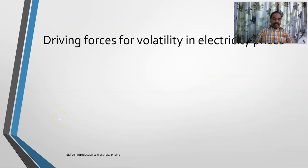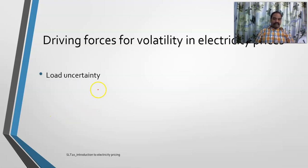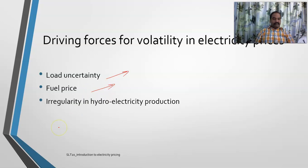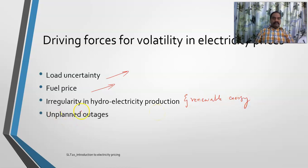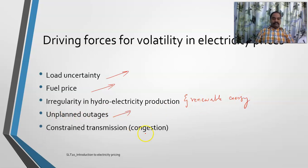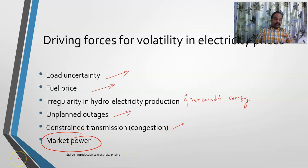The driving forces for electricity price volatility include: first, load uncertainty — if load suddenly increases, prices spike. Second, fuel prices, which we are currently experiencing. Third, irregularity in hydroelectricity production — hydro and renewable energy are very cheap but not always available. Fourth, unplanned outages, which drive prices higher. Fifth, constrained transmission capacity. And finally, market power, which was discussed in Unit Number 1.